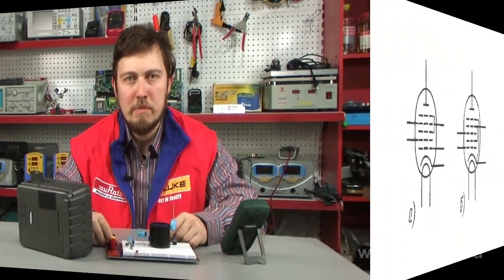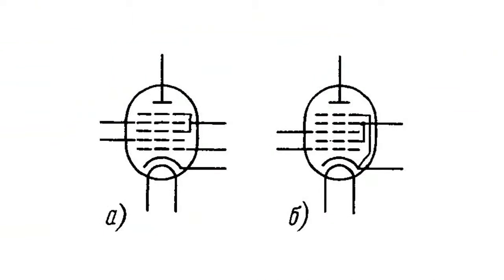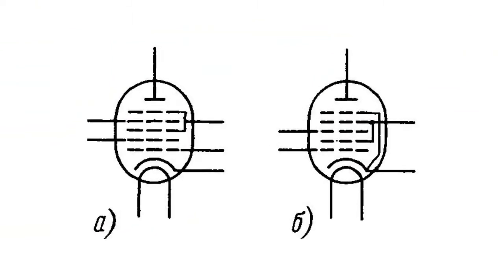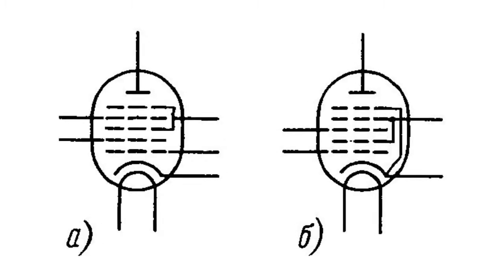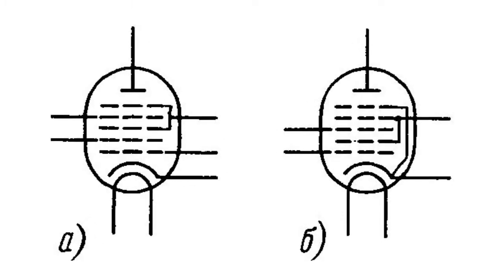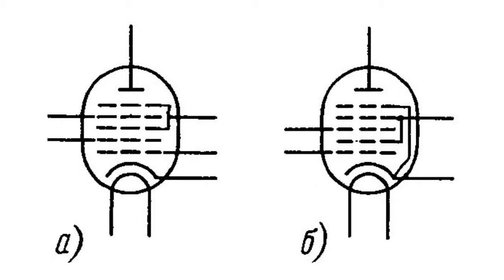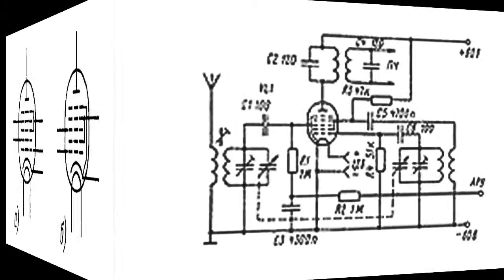The pentagrid is a receiving valve that has five control grids besides a cathode and an anode. The question arises: what is the difference between the pentagrid and the heptode, as they both have a seven-electrode tube with five grids beside a cathode. They both have the same number of grids, yet their functions are different. The first grid from the cathode in both valves is a control grid in a heterodyne, which is a transmitting triode. The pentagrid's second grid functions as an anode in the same triode, while the heptode does not have this grid.